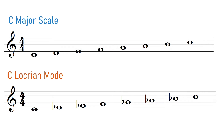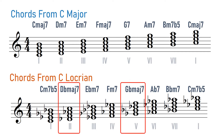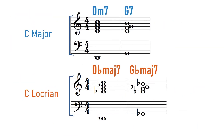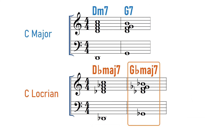As you may notice, the notes between them are quite different. When I create this drifting cadence, I will borrow the 2 and 5 chords from the Locrian mode. Let's compare the 2 and 5 chords from the C major and Locrian mode — they sound very different.